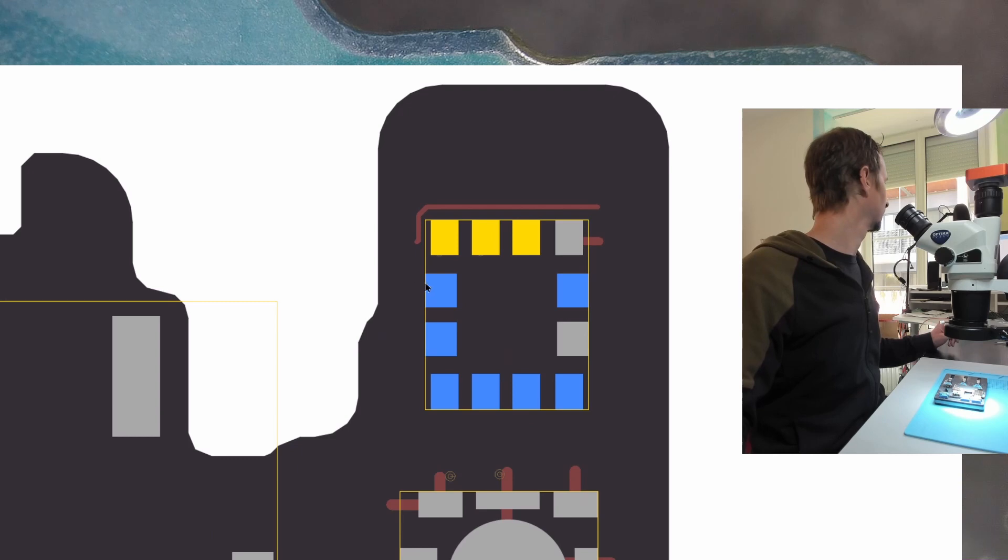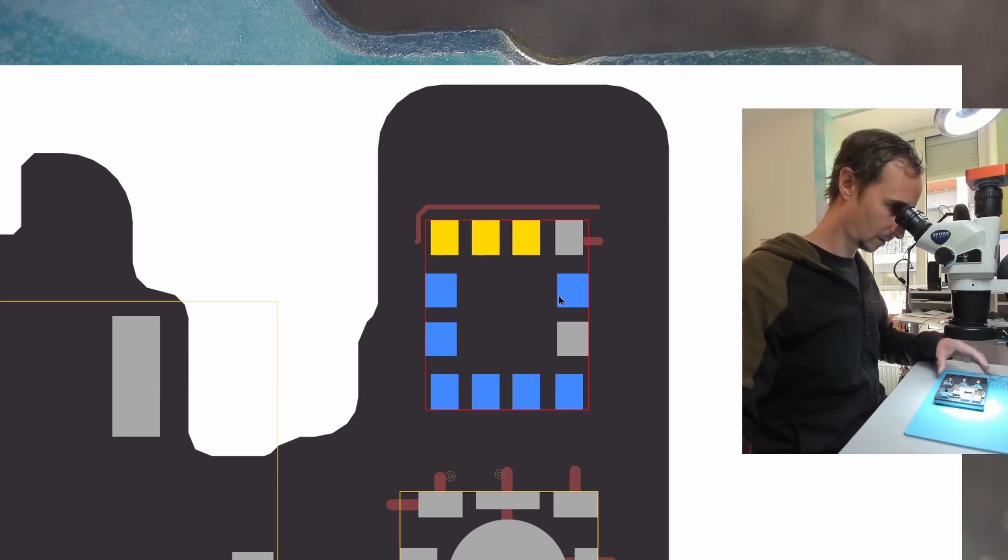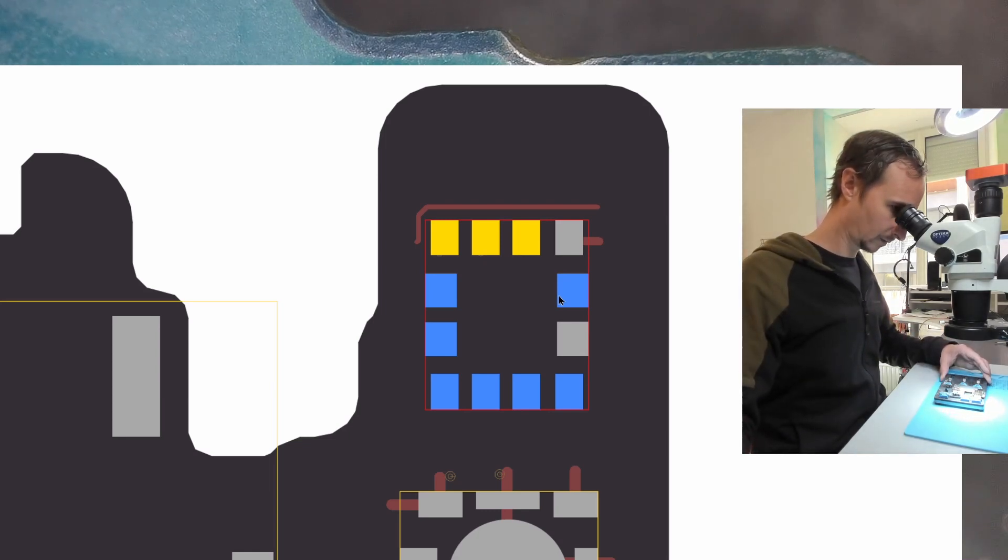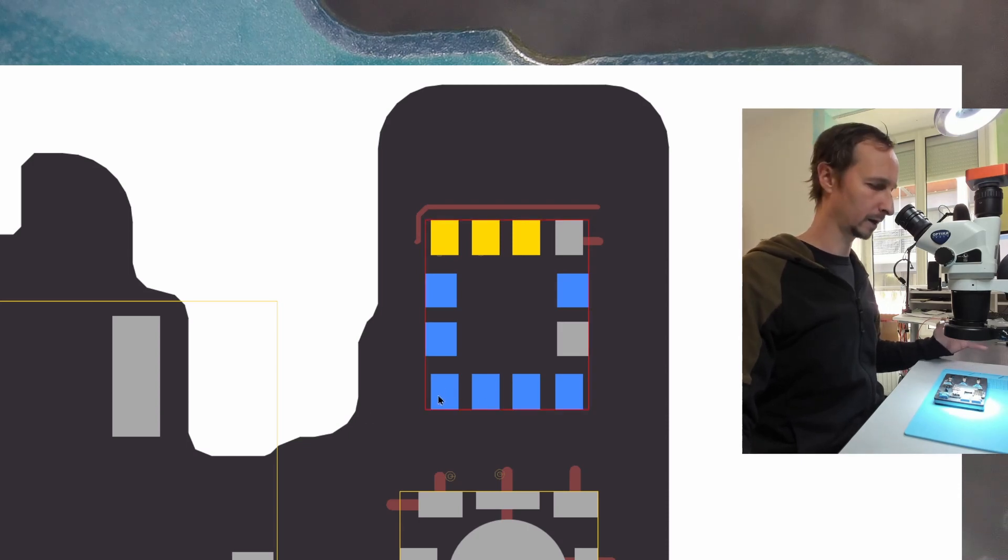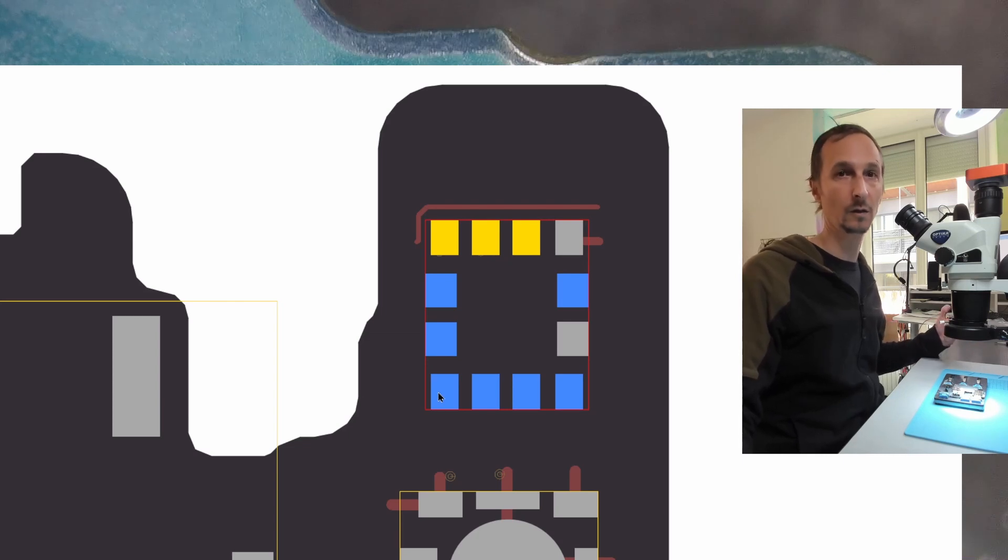Of course we have one, two, three, four, five, six, seven pads. Let me check that. Yeah, but we do only have six ripped pads. So one on the lower right here is still there, but it's not needed. So we're lucky, no trace repair.